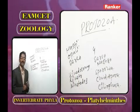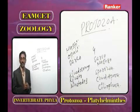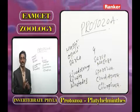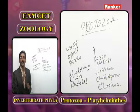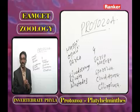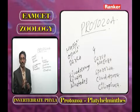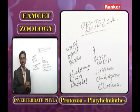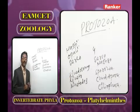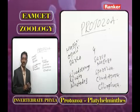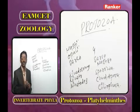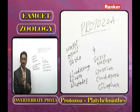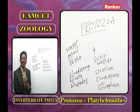The second class Actinopodea has axopodia as pseudopodia. Examples for Actinopodea are Heliozoa, Radiolarians, and Acantharians. The last class Piroplasmia contains Sarcodines that are completely parasitic. An example is Babesia.